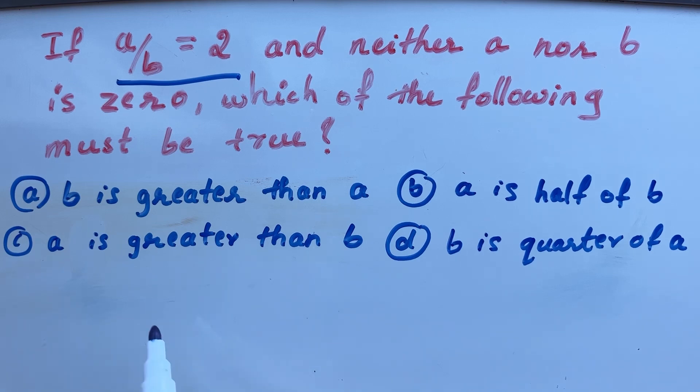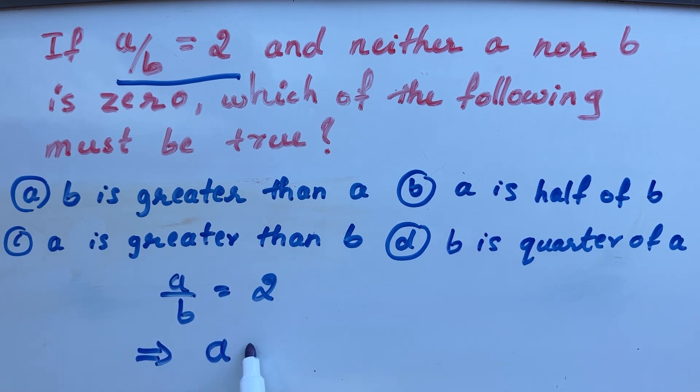So what is given? A divided by B is equal to 2. That means, A divided by B is equal to 2 means A is equal to 2 times B. Just cross multiply.